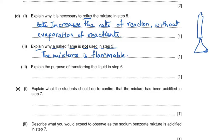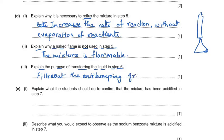The next part asks to explain the purpose of transferring the liquid in step 5. The reason is to filter out the anti-bumping granules that were added to the flask to prevent bumping of the reaction mixture during heating.